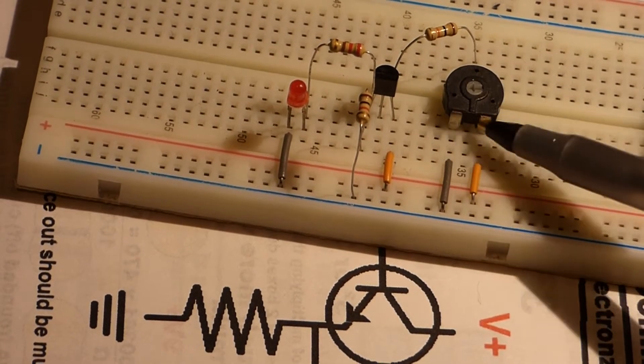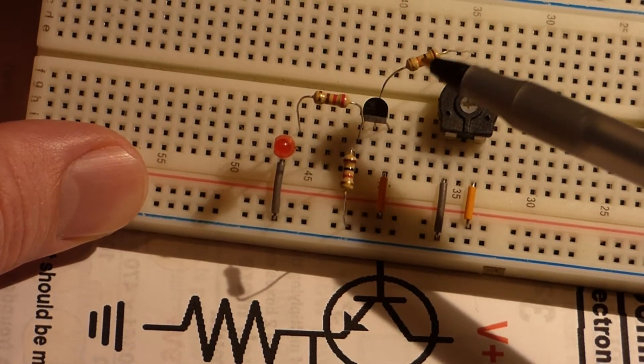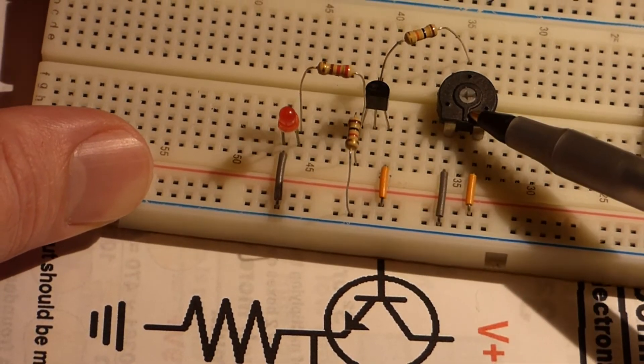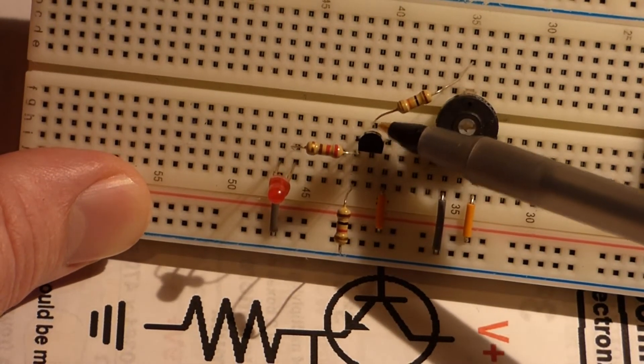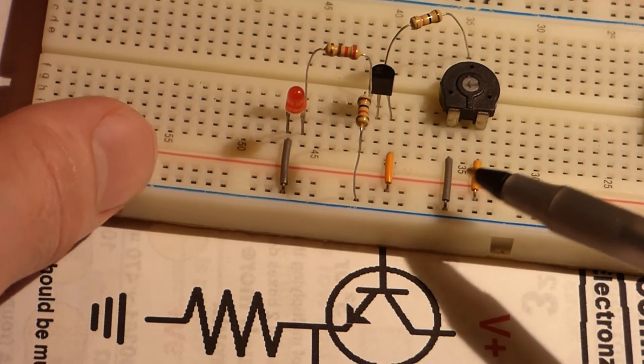It's controlled by this trim pot and also this relatively high value resistor. This is a 10 kilo ohm resistor so very little current is going to come through here. All it's going to do is control the voltage to the base of the transistor. We'll look at that later.